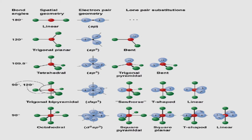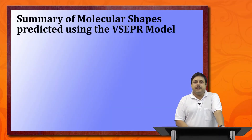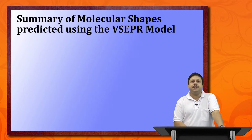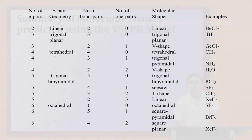In this table I have summarized different molecular shapes predicted by the VSEPR model, listing the number of electron pairs, electron pair geometry, number of bond pairs, number of lone pairs, and examples. When there are two electron pairs arranged linearly and both are bond pairs with no lone pairs, the molecule is linear — as in beryllium chloride. With three electron pairs all bonded, you get a trigonal planar structure like BF3.